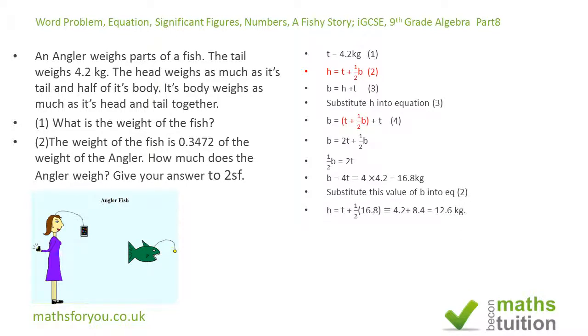So now h is t plus a half of 16.8 because the body weighs 16.8 kilograms. And 4.2 plus 8.4 gives us 12.6 kilograms, big head.